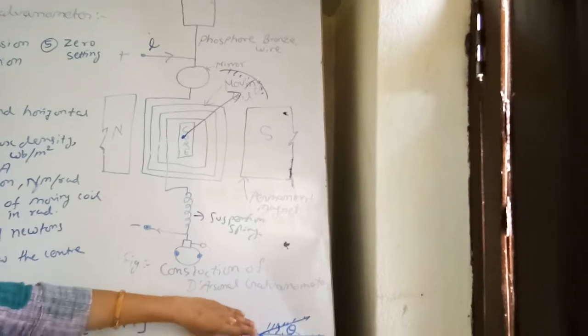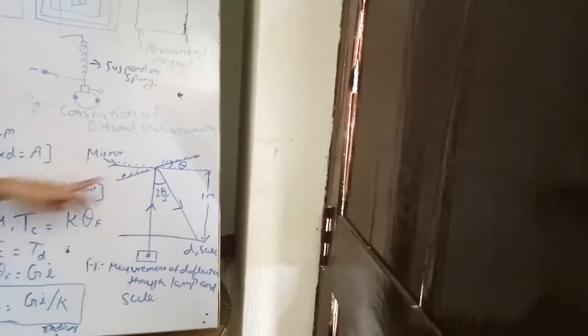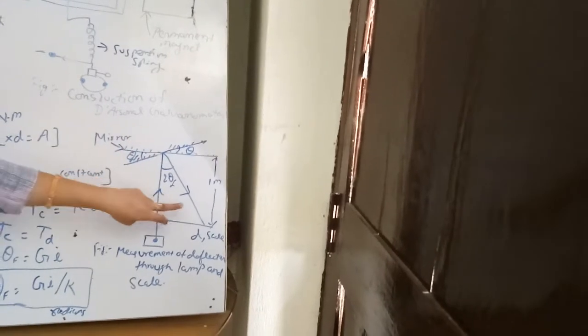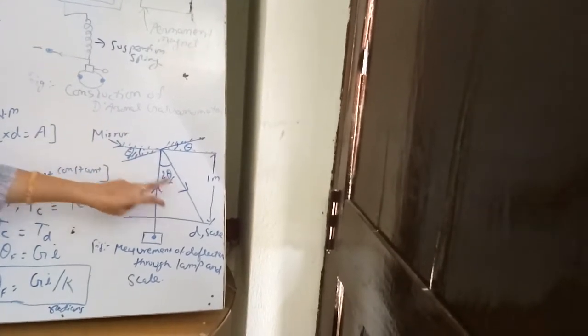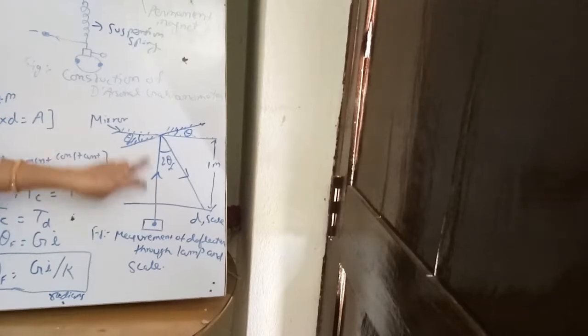Here a mirror is provided. A light beam is reflected to this mirror, and it will be deflected — that is, the deflection is proportional to the deflection angle theta_F. It keeps the light beam about 1 meter away from the coil.